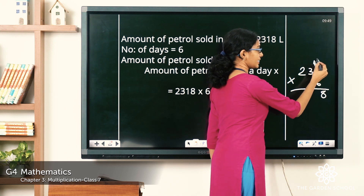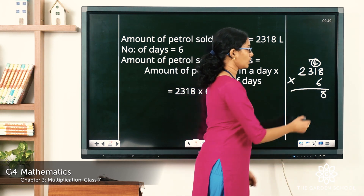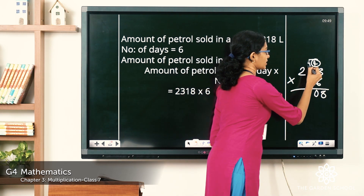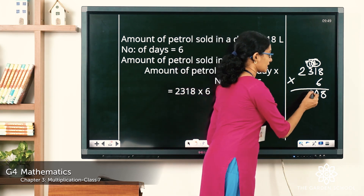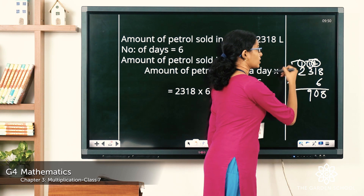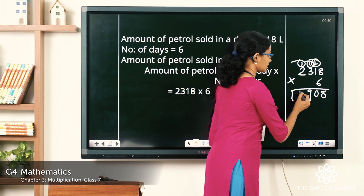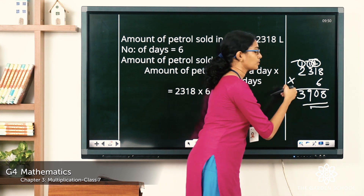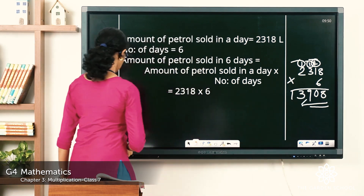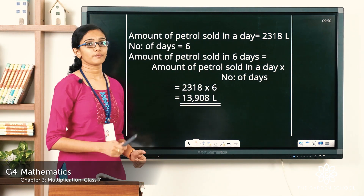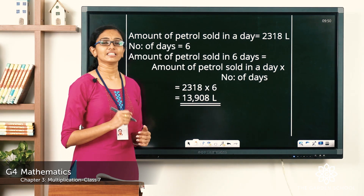Write the 8 in the ones place, carry over the 4 to the tens place. 6 × 1 = 6, plus 4 = 10; carry over 1 to the hundreds place. 6 × 3 = 18, plus 1 = 19; carry over 1 to the next place. 6 × 2 = 12, plus 1 = 13. So the answer is 13,908. The amount of petrol sold in 6 days will be equal to 13,908 liters.